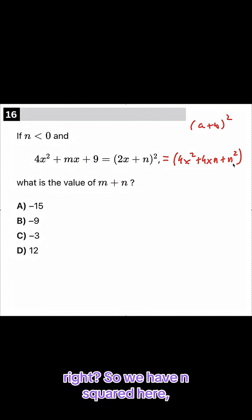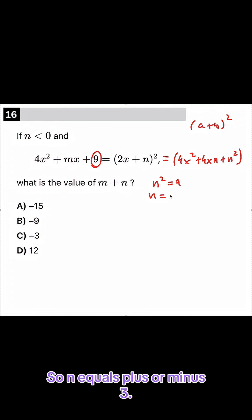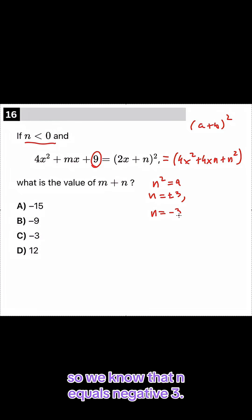Right? So we have n squared here, and then we have a 9 here, right? So we know that n² equals 9, so n equals plus or minus 3. It says here that n is less than 0, so we know that n equals negative 3.